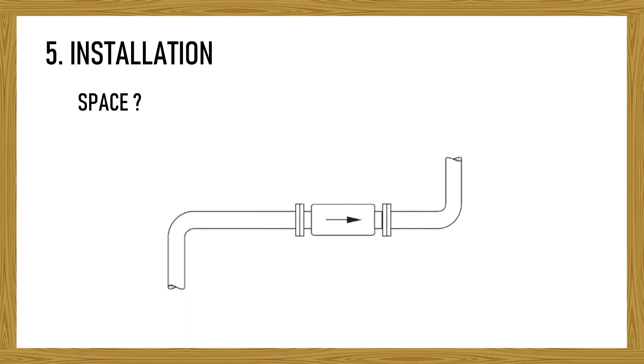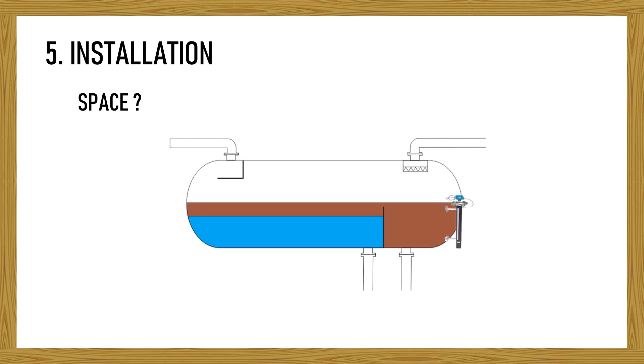Next is how the instrument will be installed. Space usually becomes an issue especially in an offshore platform where the space is limited. For example, some flow instruments require straight pipe run before and after the point of install. Space installation of level instrument which measuring low level sometimes becomes an issue when its bottom could contact with the structure surface.